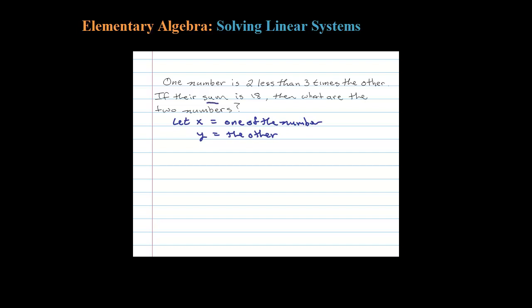When you have two variables, you need to set it up with two equations. The first equation here is that their sum is 18, so sum means to add: x + y = 18.